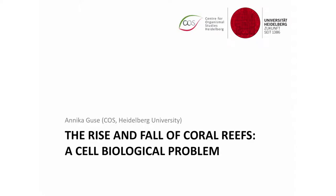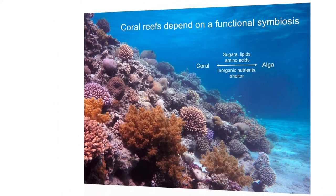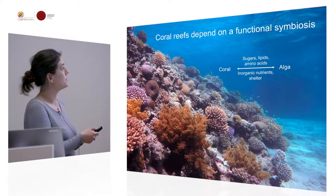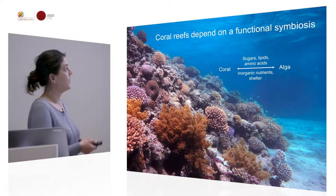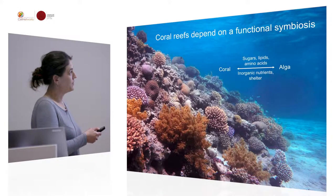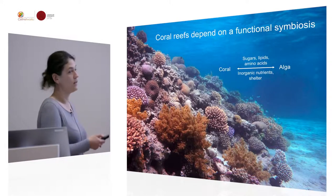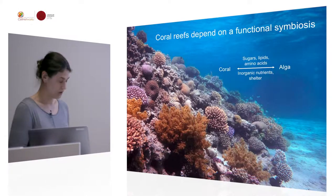Coral reefs are the most biodiverse marine ecosystems on the planet, and they depend on a functional symbiosis between algae and a coral host. These photosynthetic algae provide energy to the host and get inorganic nutrients and shelter in return.